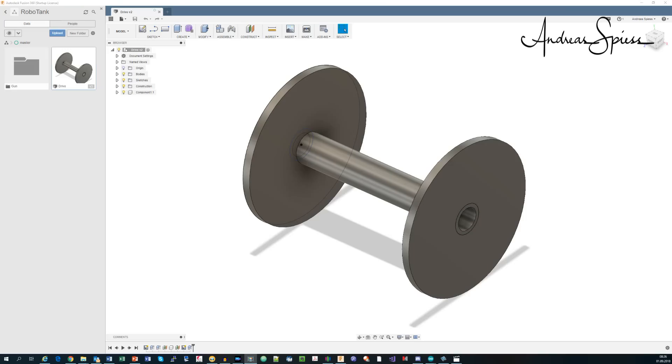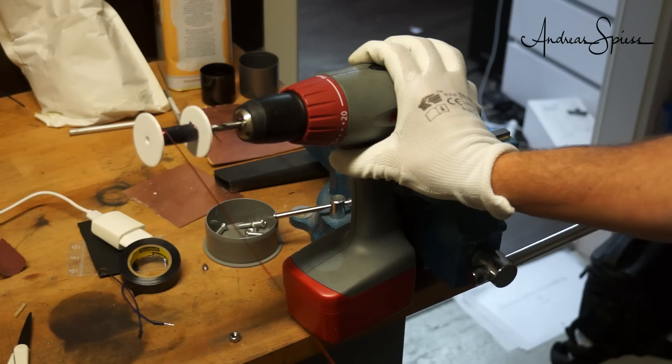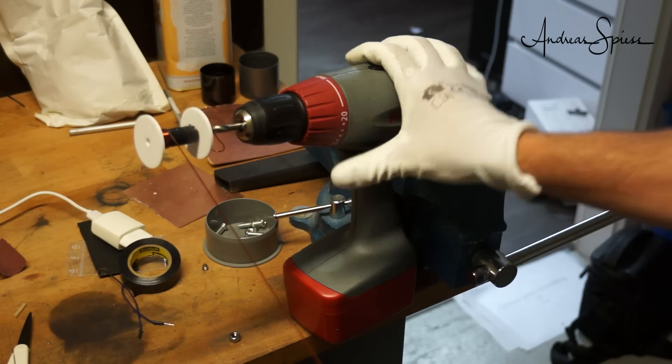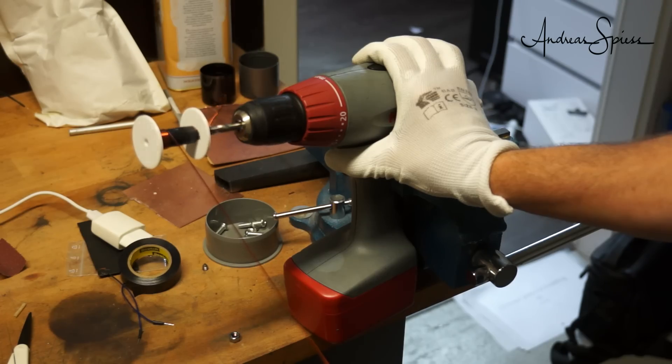So I started to print the inner part of the coil and coiled the copper wire using my electric drill. This is quite efficient and leads to a very tight coil, which is good for our purpose.